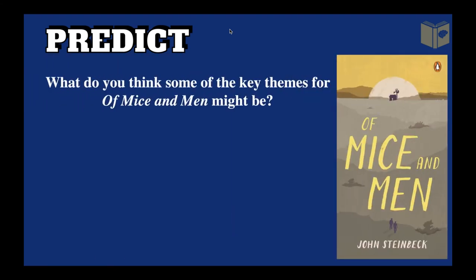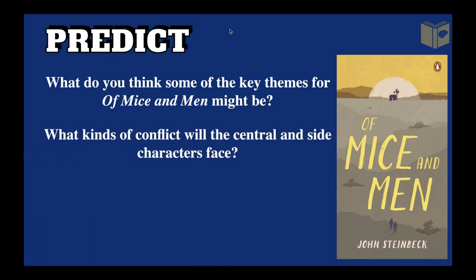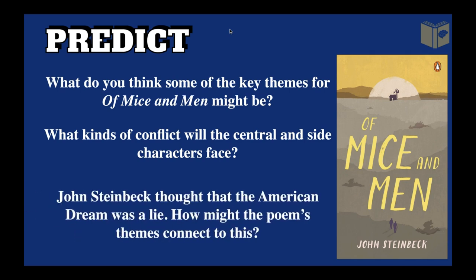Now, how will you use this for 'Of Mice and Men'? Three questions: First, what do you think some of the key themes for 'Of Mice and Men' might be after reading this, and why? Second, what kinds of conflict might the central and side characters face? Third, John Steinbeck believed the American Dream was a lie — that the working class saw themselves as 'temporarily embarrassed millionaires' and because of this belief were often exploited by the upper classes. How might the poem's themes connect to this? Those are the questions to consider.